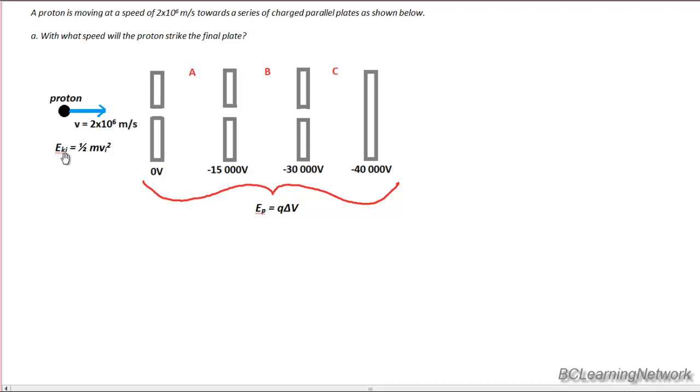You can see I've labeled my initial kinetic energy as well as the formula. So the initial kinetic energy of the proton will be one-half mass of the proton times its velocity squared, and the velocity is given.